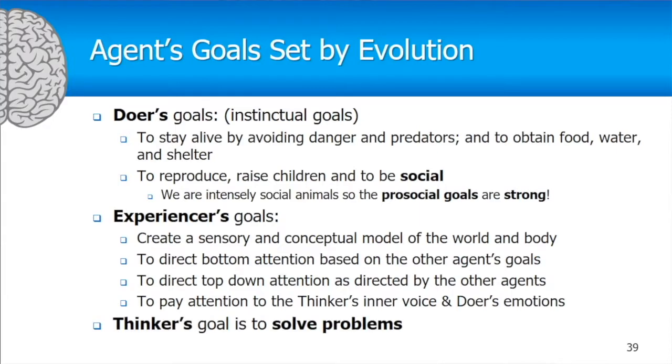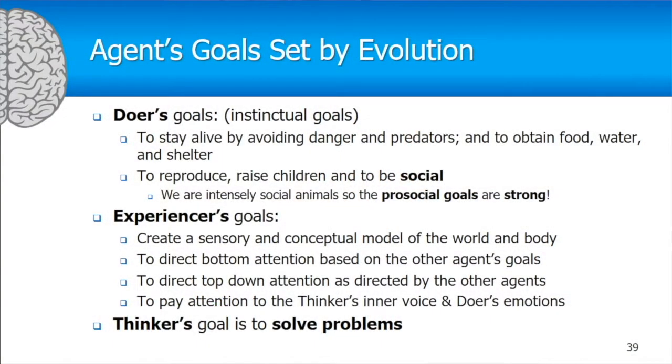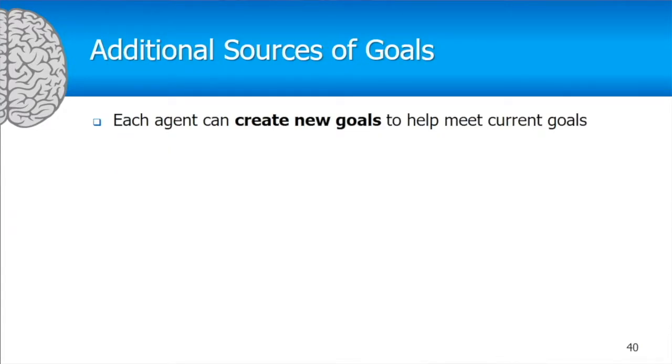The thinker's goal is simply to solve problems. Evolution designed the thinker to be a generalized problem solver because it doesn't know what kind of problems will be encountered in the world. This thinker has been able to handle the conceptual world we live in now, which is way different from anything evolution could have imagined — those billions of concepts we live in are far beyond what other animals experience.